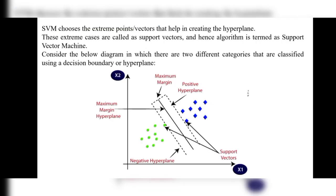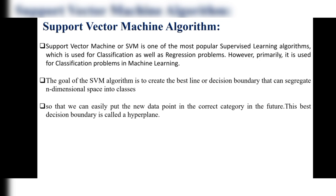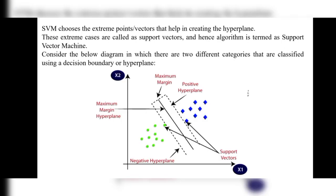SVM chooses extreme points or vectors that help in creating the hyperplane — the best decision boundary. These extreme cases are called support vectors, and hence the algorithm is termed Support Vector Machine.